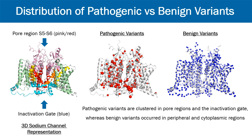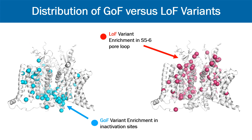We found that pathogenic variants clustered at the center of the protein, corresponding to regions of functional significance, including the pore and inactivation gate. In contrast, benign variants predominantly occurred in cytoplasmic regions, corresponding to the outer regions of the channel structure. We also found a different distribution of variants causing gain-of-function versus loss-of-function effects. For example, gain-of-function variants predominantly occurred at inactivation sites, whereas loss-of-function variants were mainly found in pore-loop regions.